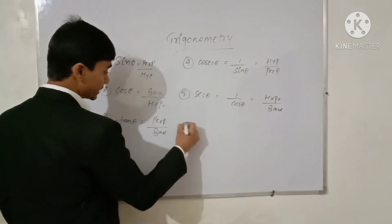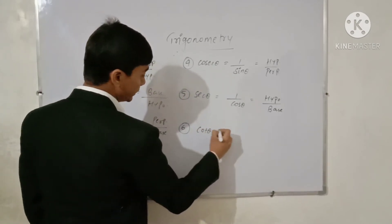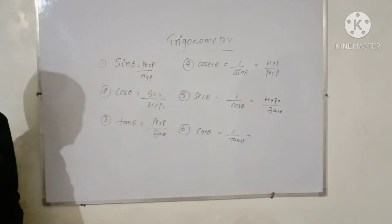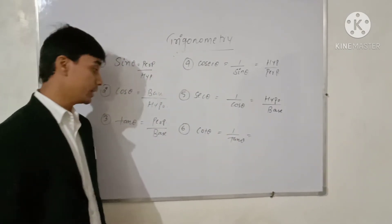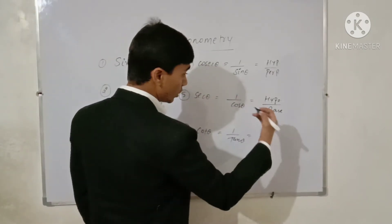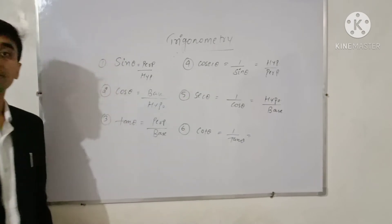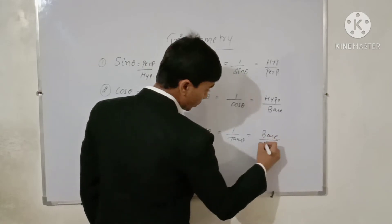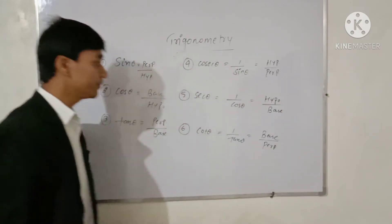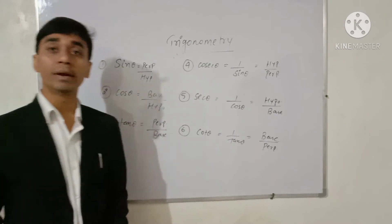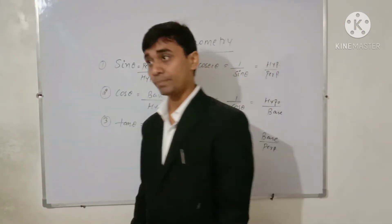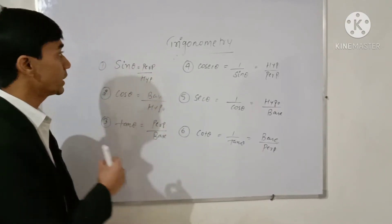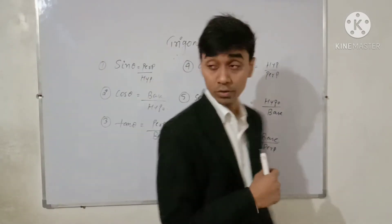The next ratio is cot theta. Cot theta is the reciprocal of tan theta. Since tan theta is perpendicular upon base, cot theta is equal to 1 upon tan theta, which gives base upon perpendicular. These are the six Trigonometric ratios we will use throughout this chapter, and they are the most important foundation of Trigonometry.